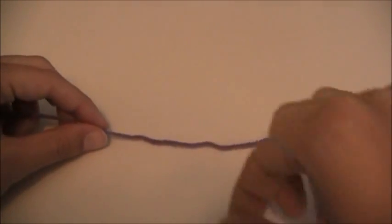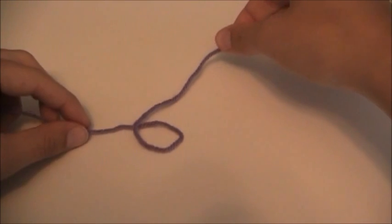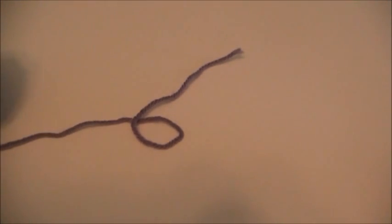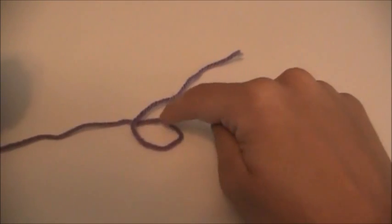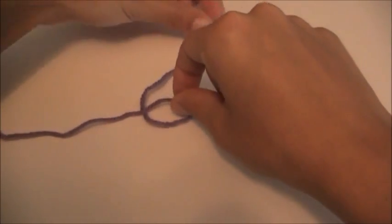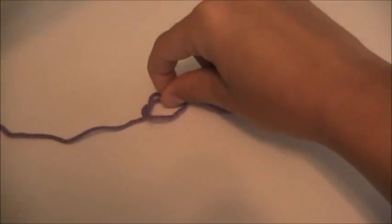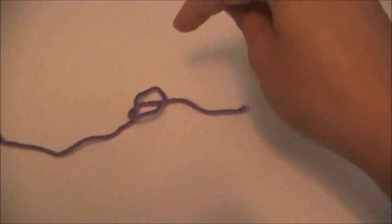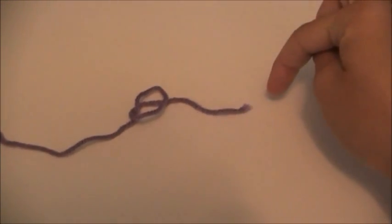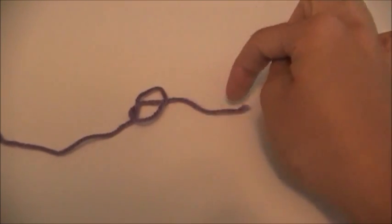You're going to take the loop, the end of the yarn and basically lay it down onto itself. This will now create a circle here. You're going to take this circle and lift it up and lay it down on the tail of your yarn. And you'll notice how I have a circle with basically the tail running through.